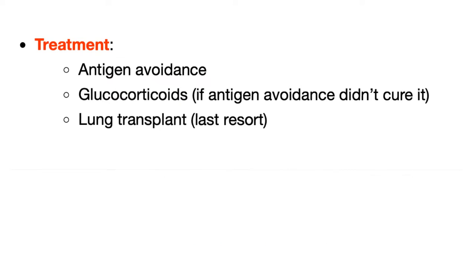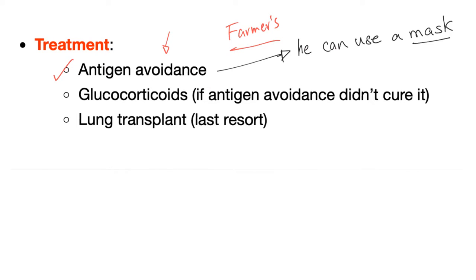How to treat hypersensitivity pneumonitis: first, antigen avoidance — easier said than done, because for a farmer this is their livelihood. A practical trade-off is to use a mask to minimize exposure. Glucocorticoids (steroids) are used if antigen avoidance did not cure the disease. And lung transplant is the last resort when all else fails.